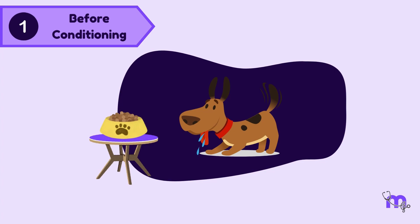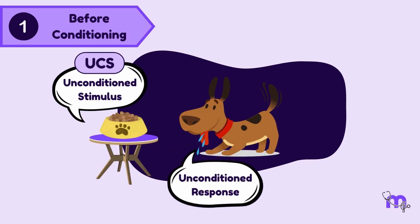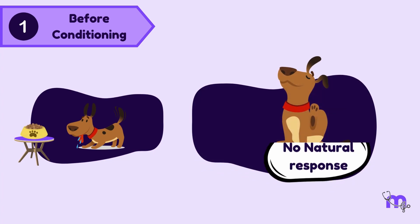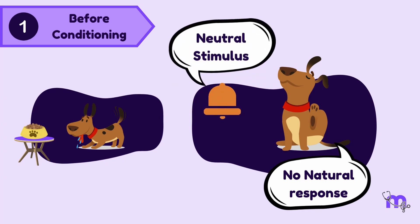Therefore, the food is the unconditioned stimulus, UCS, that produces an unconditioned response, UCR, which is salivation. The stimulus in the environment has produced a behavior or response that is unlearned. This stage also involves another stimulus that has no effect on the individual — in this case, ringing the bell — called the neutral stimulus. The dog does not show any natural response to the ringing of a bell.